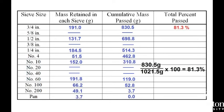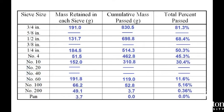Convert cumulative mass passed to a percentage of the total mass of the sample. To do this, simply divide the amount by the total mass of the sample and multiply by 100 for a percentage. Do this for each sieve size.